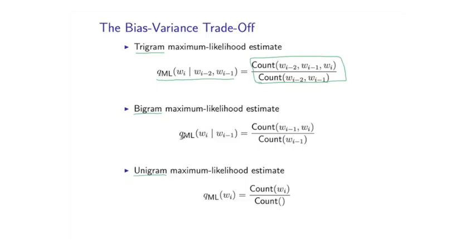So the bigram estimate, again we use q sub ml, looks at a word wi and just the previous word wi-1. So this is an estimate which conditions only on the previous one word as opposed to the previous two words in the context. And again, this is simply defined as a ratio of counts. On the numerator I have now a bigram count, and on the denominator I have a unigram count.